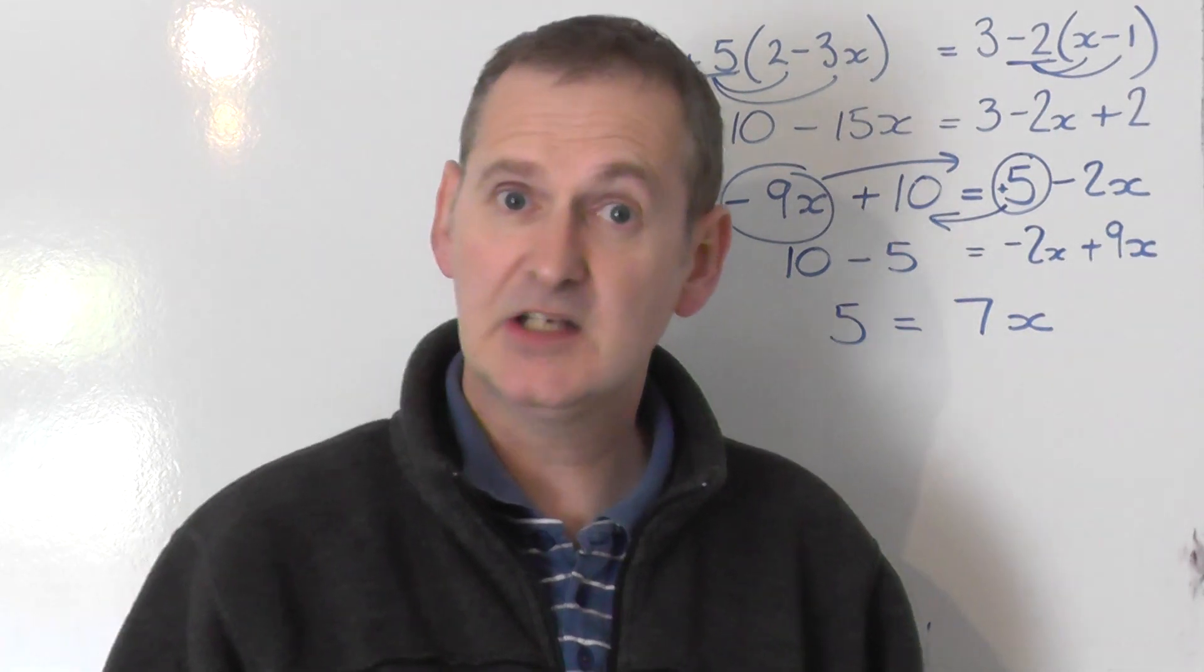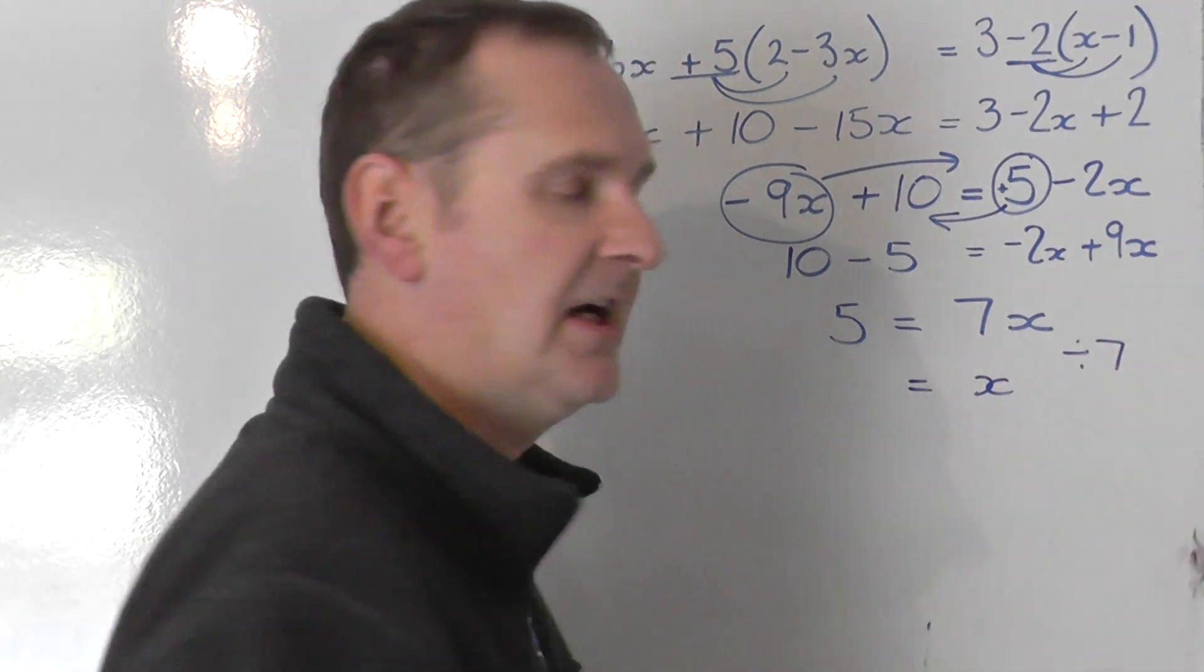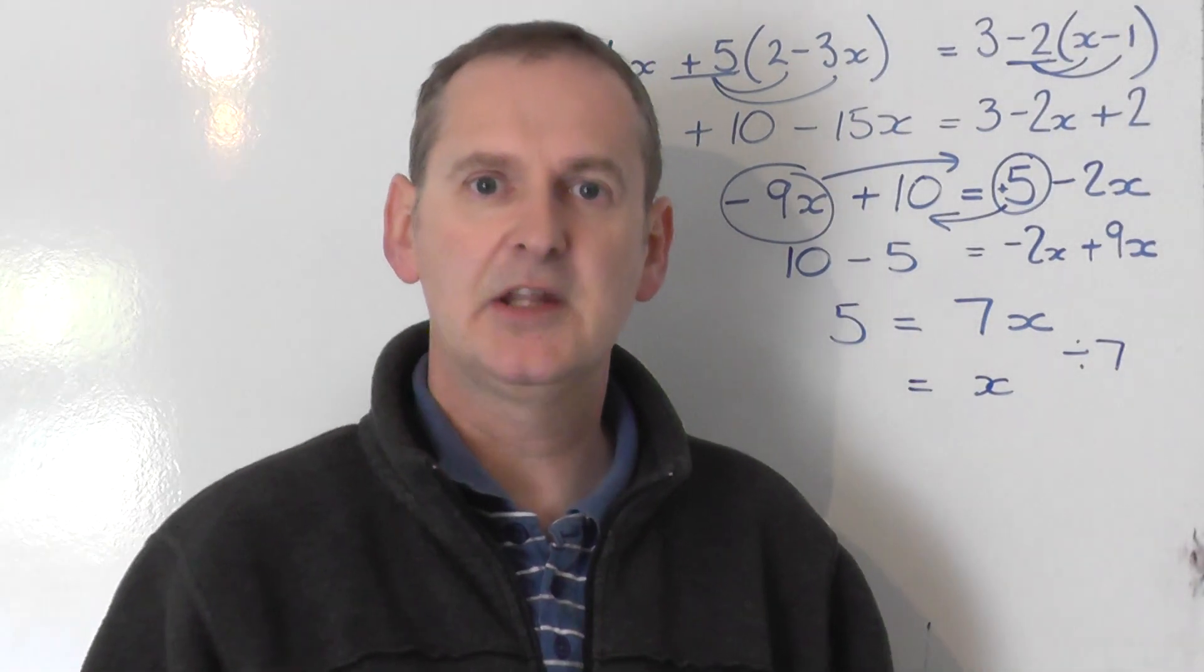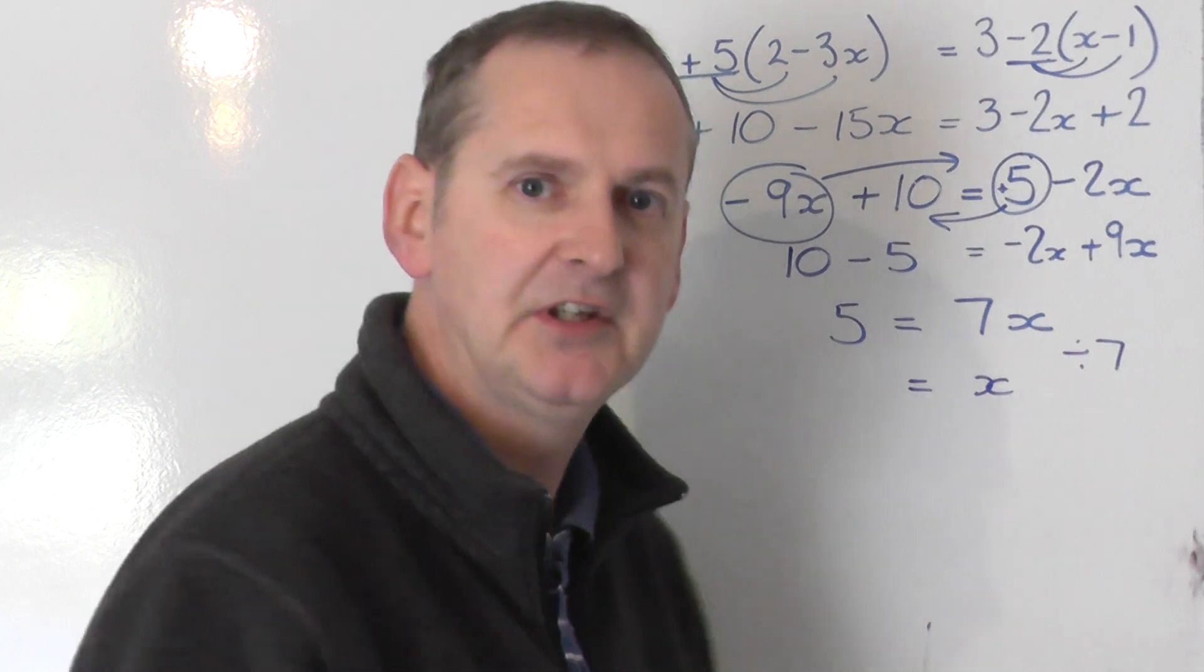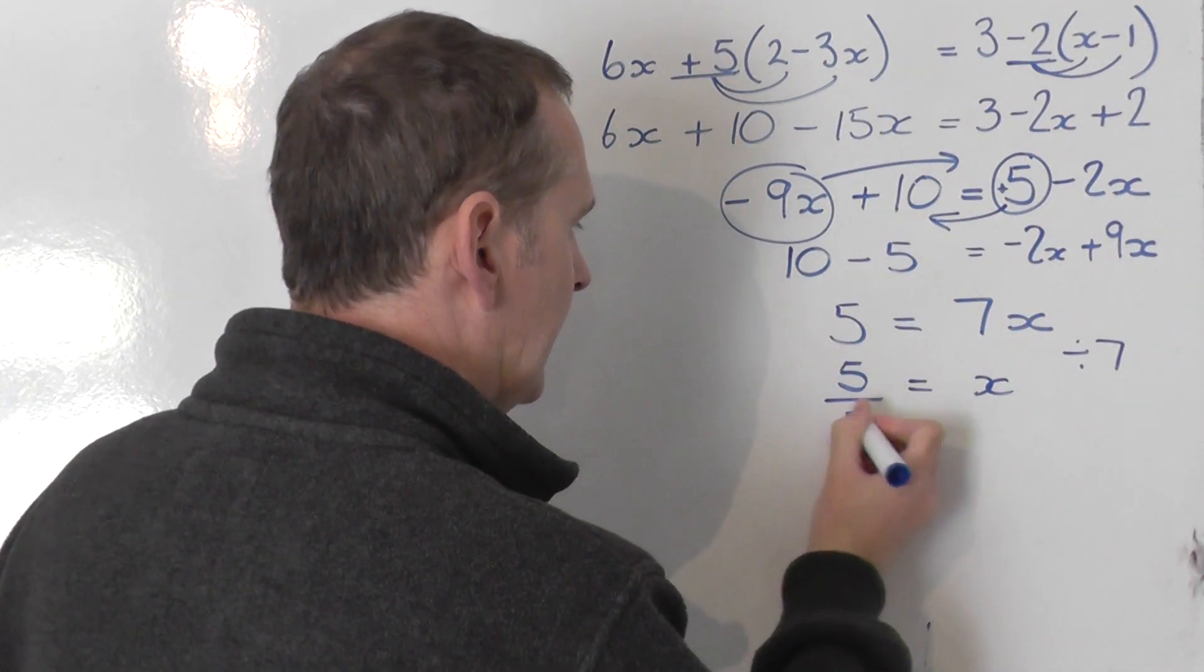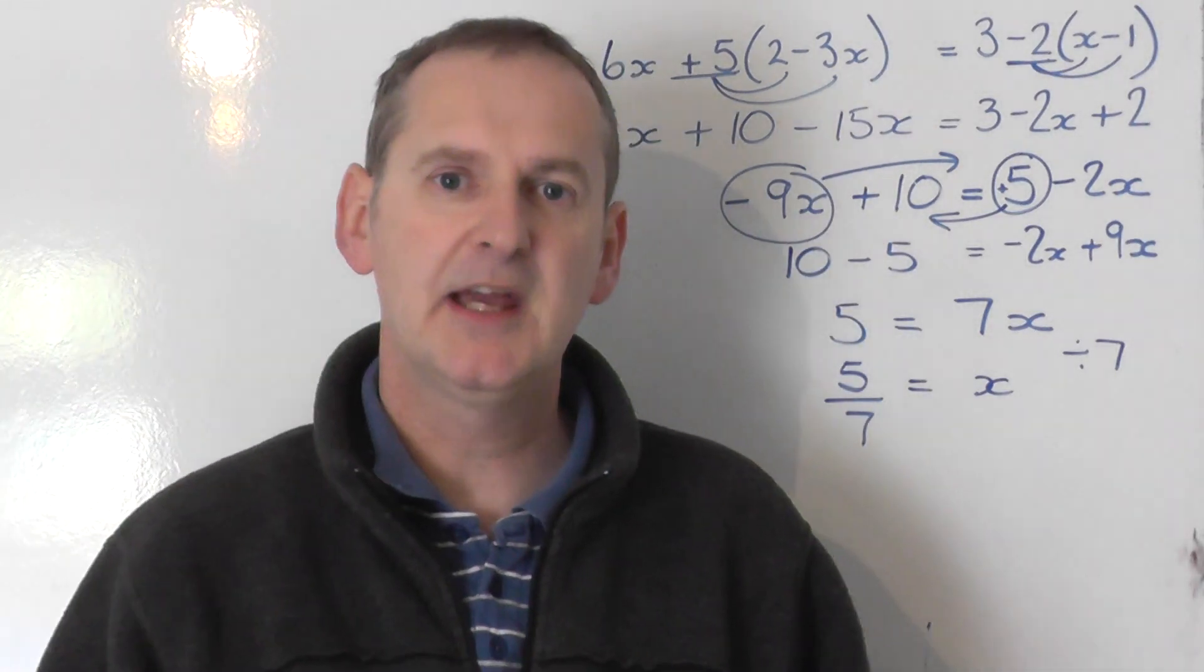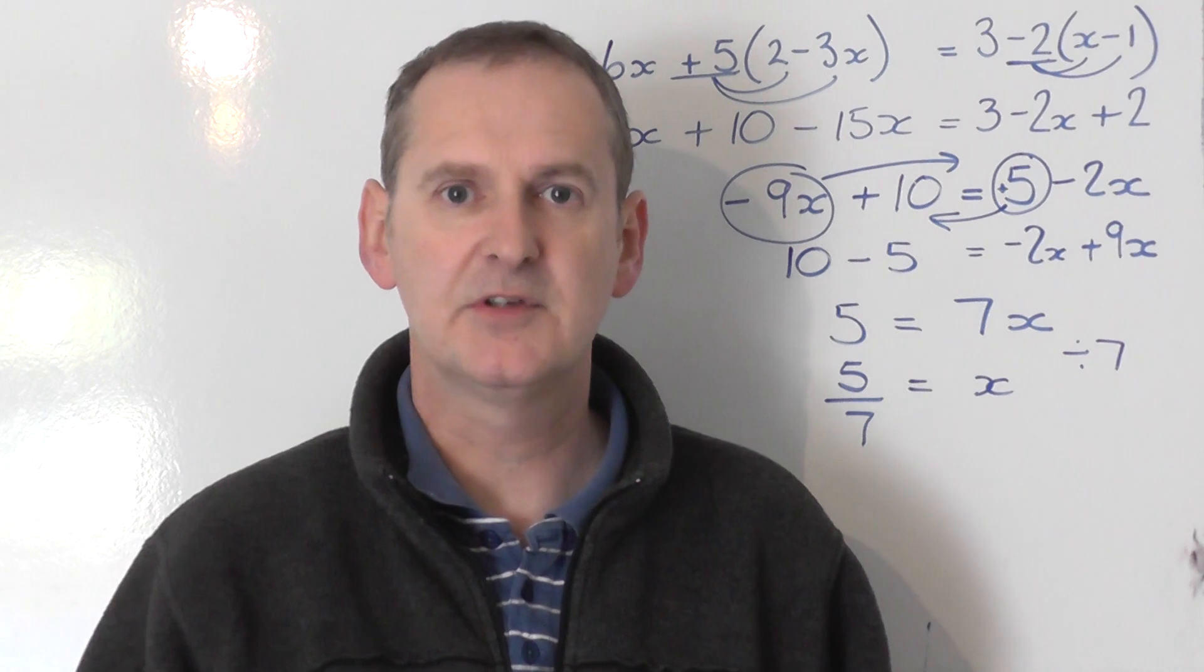I don't want 7x, I want x. So to go from 7x to x, I divide the right hand side by 7. I divide the left hand side by 7 as well to keep it balanced. 5 divided by 7 is not a nice number. The answer is the fraction 5/7.